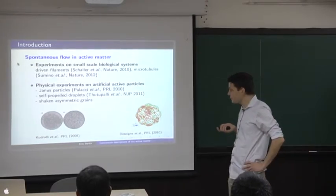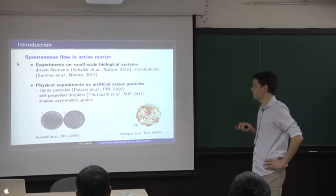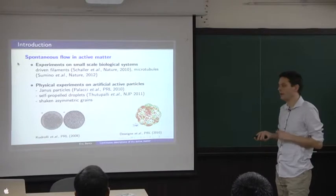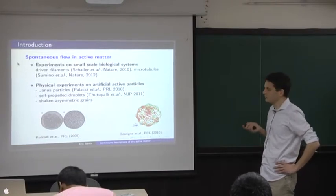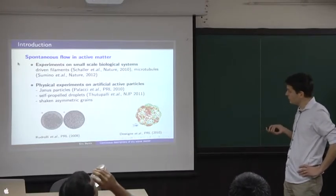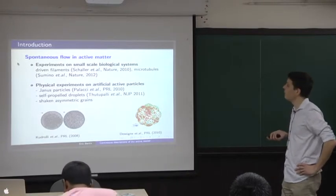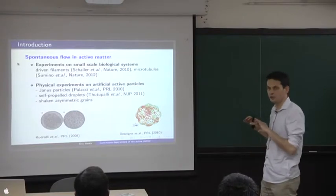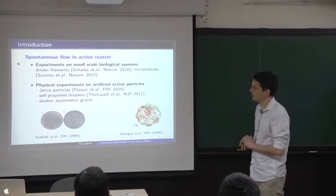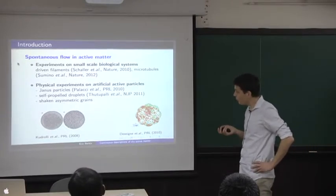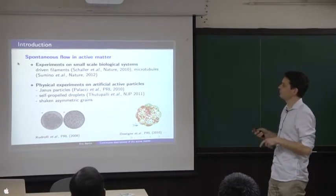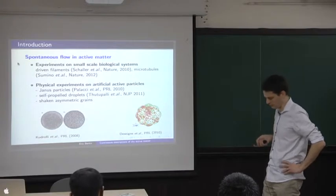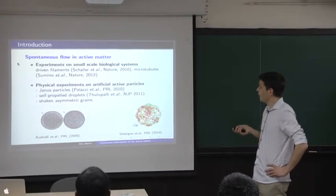If you want to do more quantitative experiments, you can go to small-scale biological systems like driven filaments or microtubules, where you really have control parameters that you can tune. It's much more quantitative. Turning to physics, physicists have been interested in the last years about artificial kinds of active particles. For instance, you can use Janus particles, which are spheres coated with two different metals, so two half-spheres have different coatings. Due to some reaction with chemical products in the solution, this induces gradients and some flow which propels the particle.